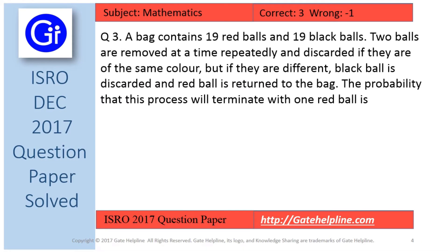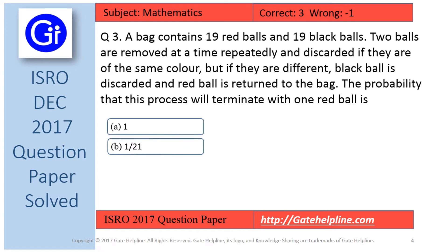Question number 3 is: a bag contains 19 red balls and 19 black balls. Two balls are removed at a time repeatedly and discarded if they are of the same color, but if they are different, the black ball is discarded and the red ball is returned to the bag. The probability that the process will terminate with 1 red ball is — options are: a) 1, b) 1/21, c) 0, and d) 0.5.